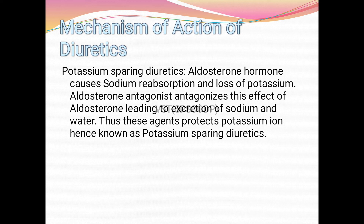The function of aldosterone hormone is to cause reabsorption of sodium from the nephron lumen back into blood circulation, and to cause loss of potassium. Aldosterone antagonists block this effect — sodium reabsorption is prevented and potassium is retained in the blood capillaries.